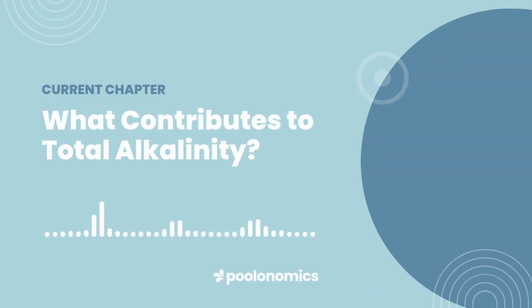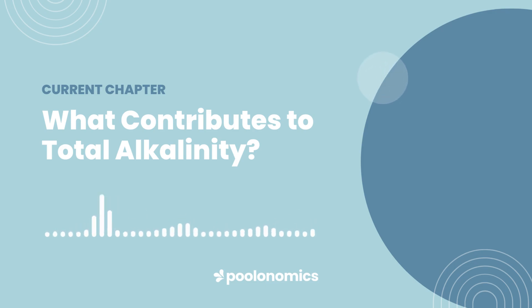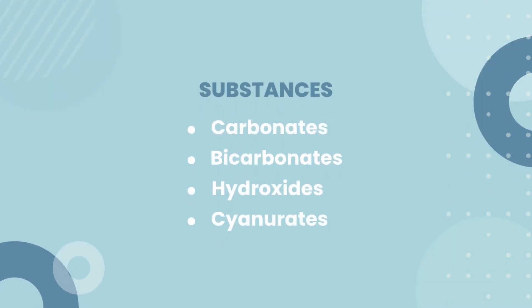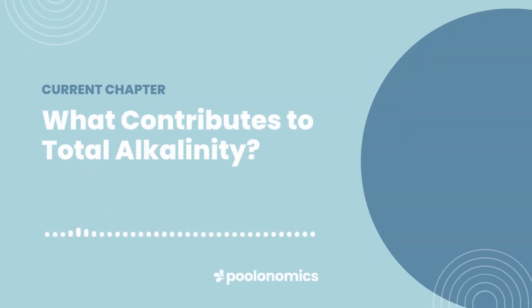What contributes to total alkalinity? There's a lot of stuff dissolved in your pool water. Some of that stuff acts like a sponge, absorbing acids it comes into contact with. It's those substances that make up your total alkalinity, and they mostly include carbonates, bicarbonates, hydroxides, and cyanurates. These are often added to your water through various pool care products, including those used to adjust your pH and alkalinity, as well as chlorine stabilizers.